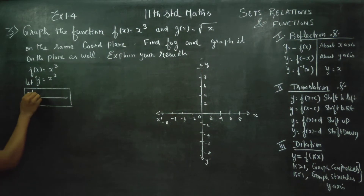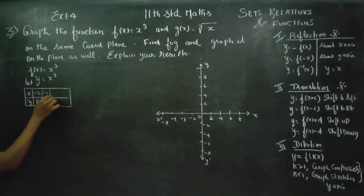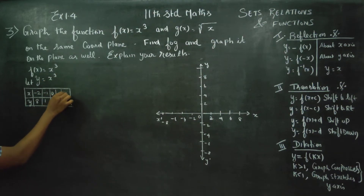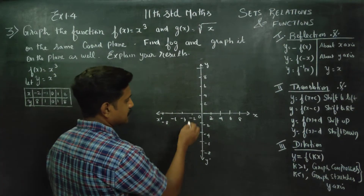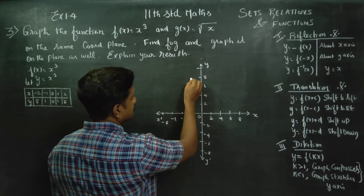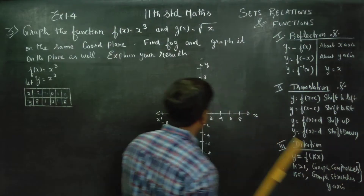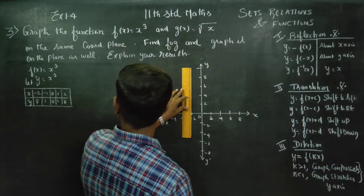x is equal to minus 2: minus 2 cubed is 8. Minus 1: minus 1 cubed is 1. 0: 0 cubed is 0. Plus 1: plus 1 cubed is 1. 2: 2 cubed is 8.